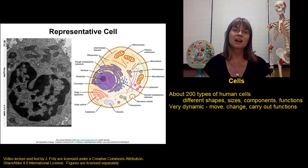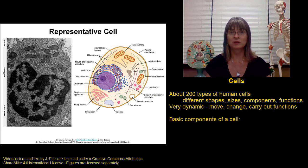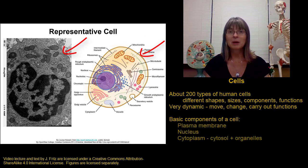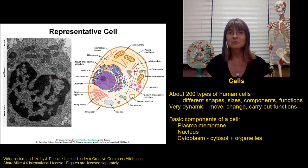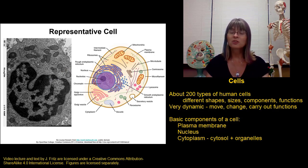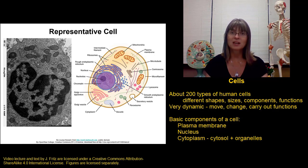All of these cells have the same basic components. All of these cells have a plasma membrane, they all have a nucleus, and they all have cytoplasm. The cytoplasm contains the liquid or gel part of the cell, which is the cytosol, and also all of the organelles that help the cell carry out the different functions.